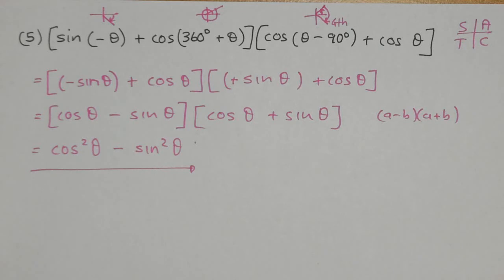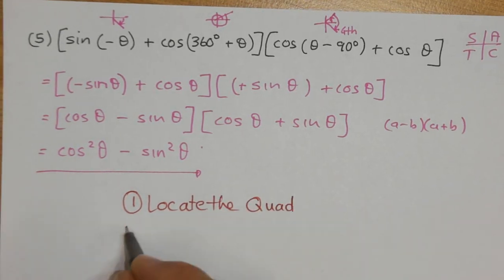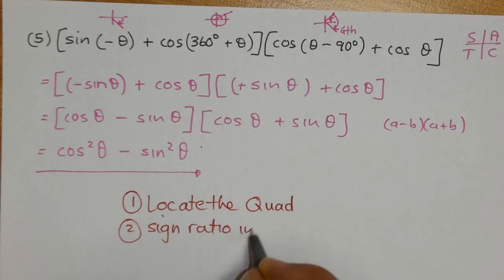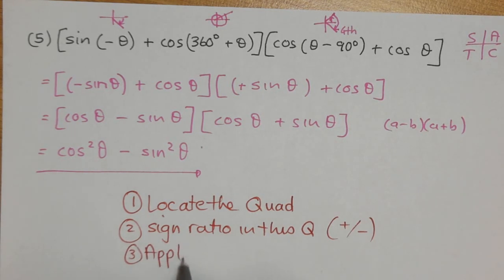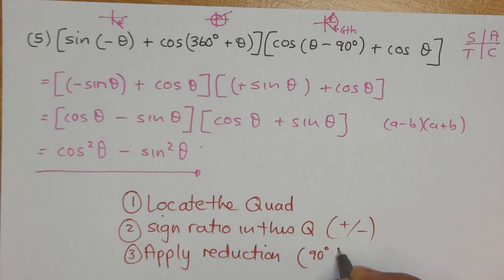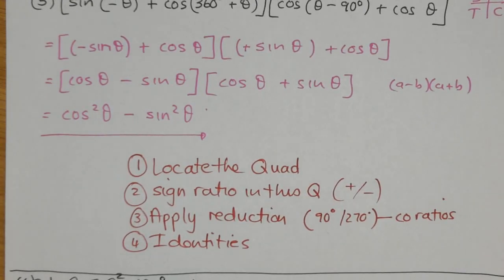Remember the shopping list of steps: first, locate the quadrant; second, determine the sign of the ratio in that quadrant; third, apply the reduction — watching out for 90 and 270 since those trigger co-ratios; and fourth, apply identities to simplify. I hope that helped you see how identities apply. In the next video, we'll look at what to do when the reduction formula isn't given to you.